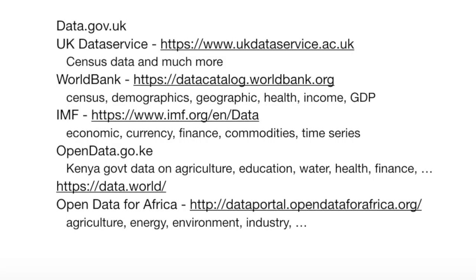IMF — International Monetary Fund — has a lot of data on financial and economic topics, also currency exchange rates, and commodity pricing. A lot of this stuff from government sources, IMF and World Bank especially, is going to be time series data because they're basically sampling data points on prices on a periodic basis — whether it's hourly, weekly, daily, or monthly.